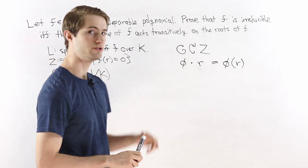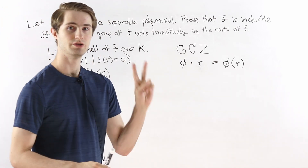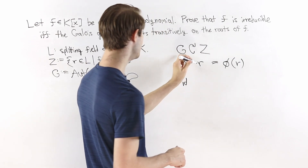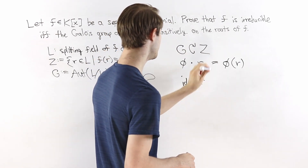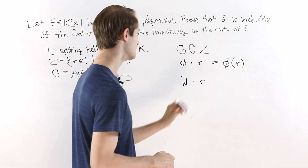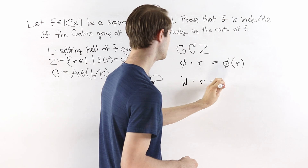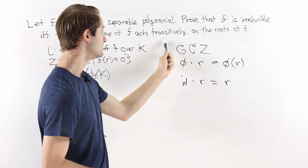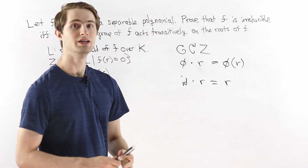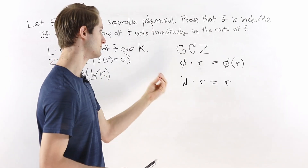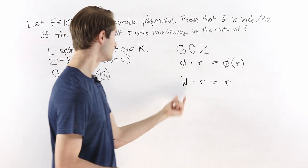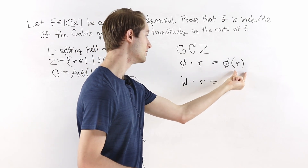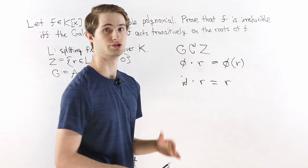Let's quickly prove that this is a group action. There are two conditions to verify. First, if we take the identity element of G and apply it to any element of Z, we should get that same element back. The identity element of G is the identity map, which maps every element to itself. So the identity map applied to r is just r — the first condition is satisfied.